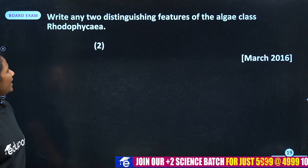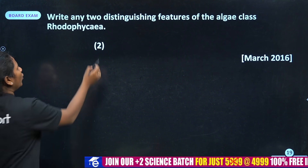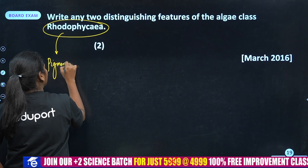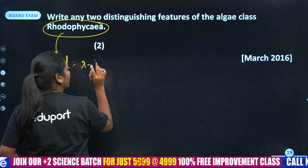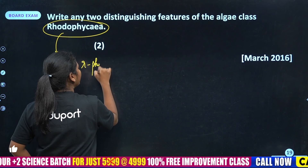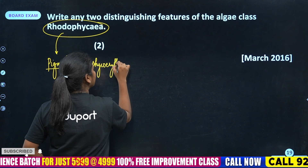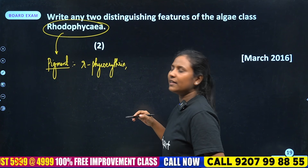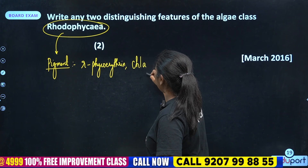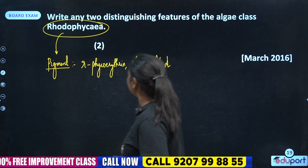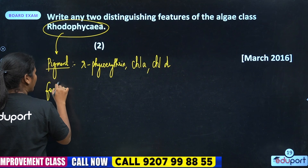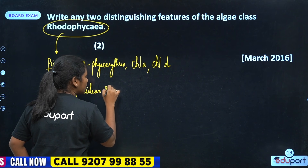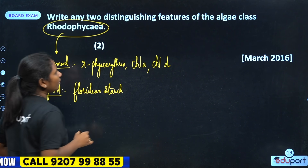Write any two distinguishing features of the algae class Rhodophyceae. One is pigment — R-phycoerythrin gives it a red color. The chlorophyll present is A and D. The stored food is Floridian Starch.